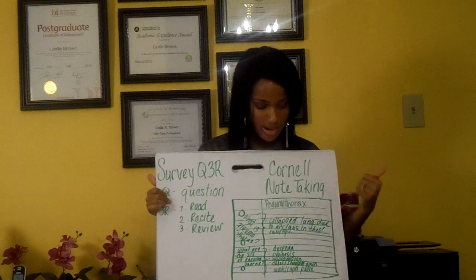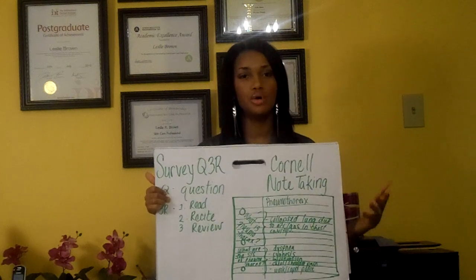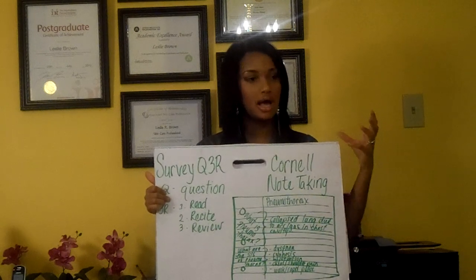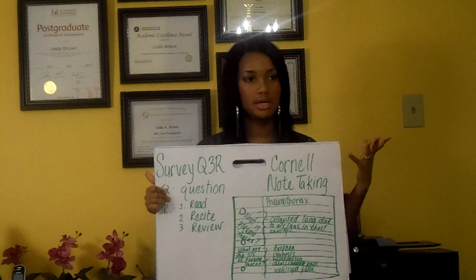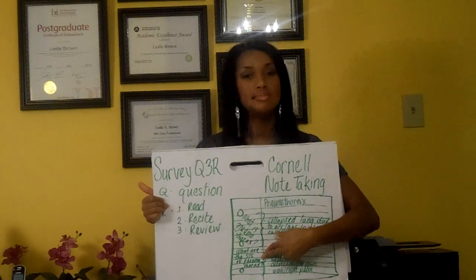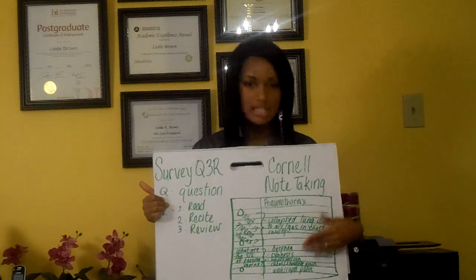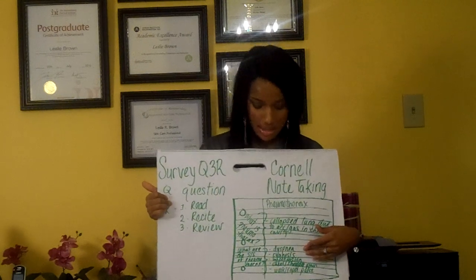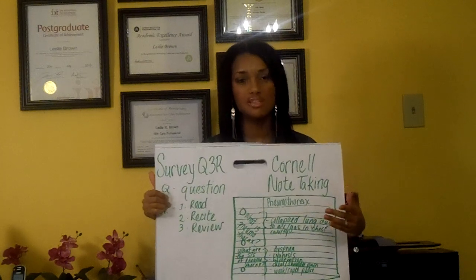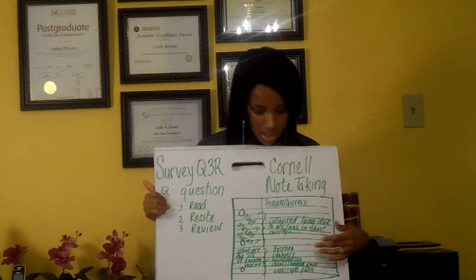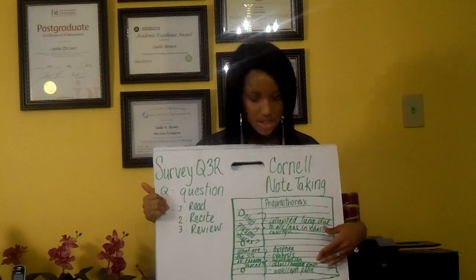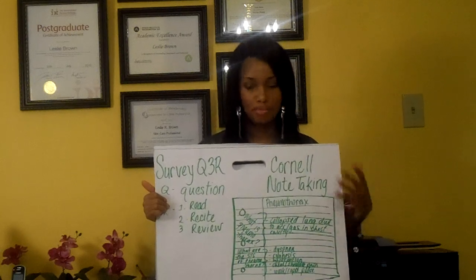Pneumothorax is a collapsed lung due to air pressure or gas stuck in the chest cavity, creating the pneumothorax condition. The signs and symptoms of pneumothorax include dyspnea, which is difficult or painful breathing; cyanosis, which is a bluish color to the skin due to insufficient oxygenation; hypotension, which is low blood pressure; chest and shoulder pain; and a weak and rapid pulse.